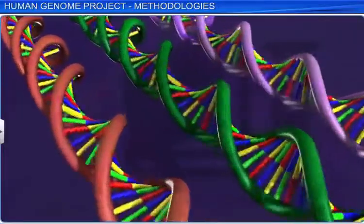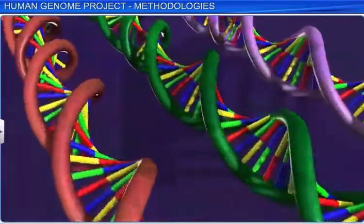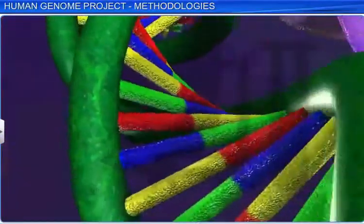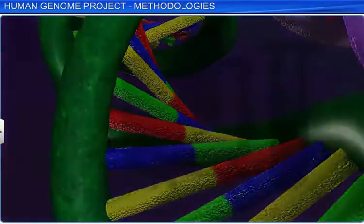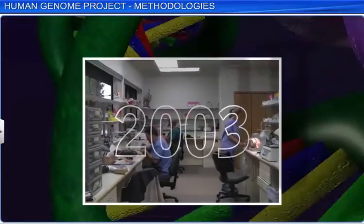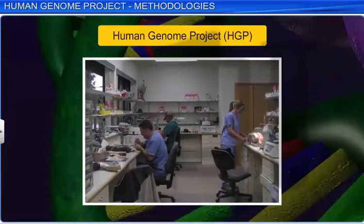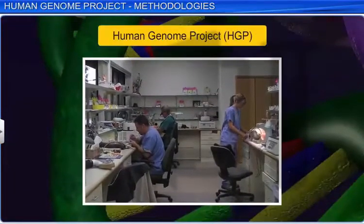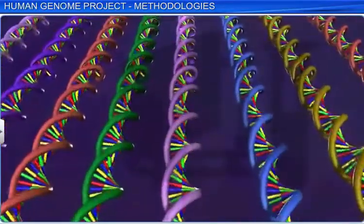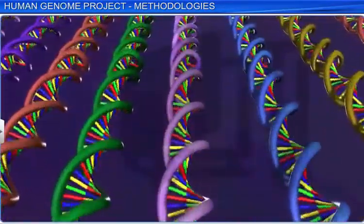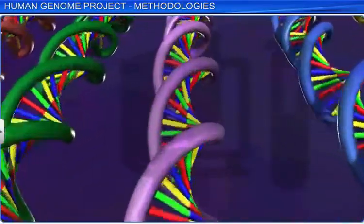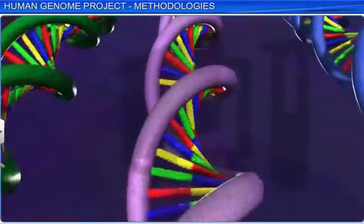In the past, biological researchers could study only one or two genes at a time. This changed completely in 2003, with the completion of the Human Genome Project. With the entire gene sequence and advanced genetic engineering technologies at one's disposal, biological research could now be conducted on a larger scale.